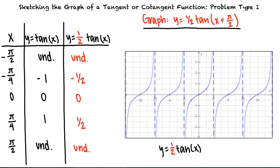However, the asymptotes have not changed meaning the width of each cycle of the graph is the same. Now we must account for adding pi halves to x in the parentheses.